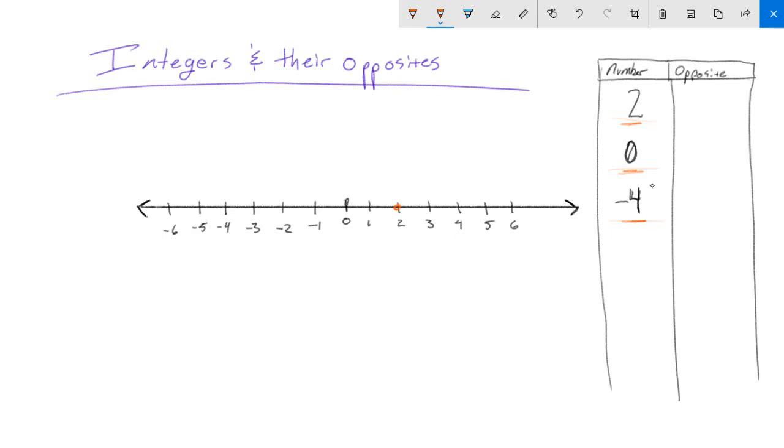Well, two is right here, right? The opposite of two is two units from zero, but on the other side of zero. So I'd say, okay, one, two. So on the other side of zero, I'm going to go one, two, and the opposite of two is negative two.